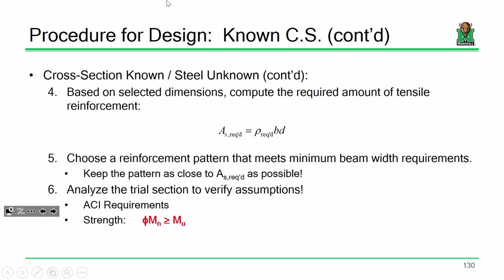Does anybody have any questions? This is important stuff, so I really want this to be clear. Again, we're not using the 0.18 fc-prime over fy because we're not in unknown cross-section territory.